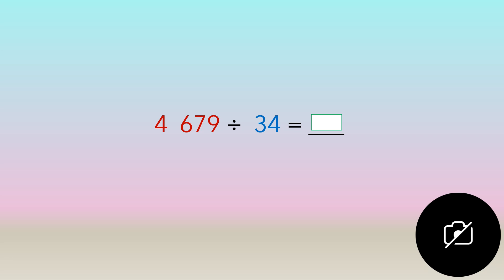Basically what this asks is how many groups of thirty four make up four thousand six hundred and seventy nine. You need to know what each number represents. We look at the first number in red, which is four thousand six hundred and seventy nine. That is called the dividend — that is the number that is being divided.